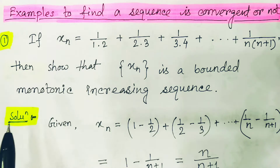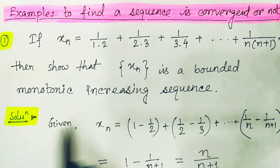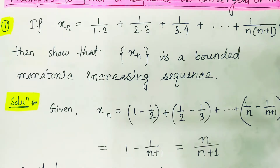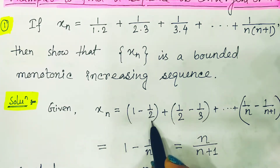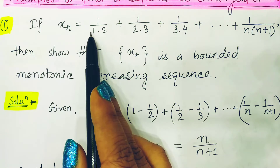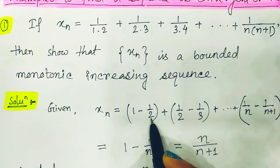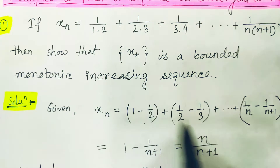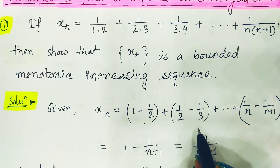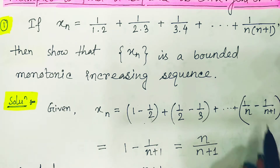We want to show that this sequence is bounded and monotonically increasing. For our given term xn, we can write 1/(1·2) as 1 minus 1/2, and 1/(2·3) as 1/2 minus 1/3. Likewise, the nth term 1/(n·(n+1)) can be written as 1/n minus 1/(n+1).